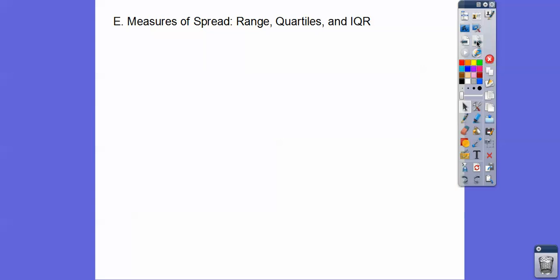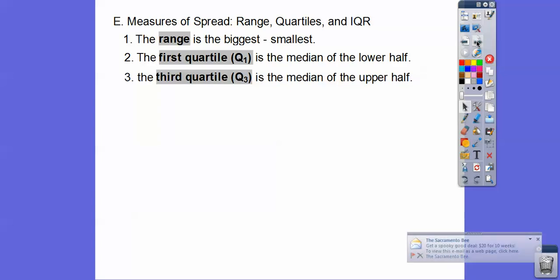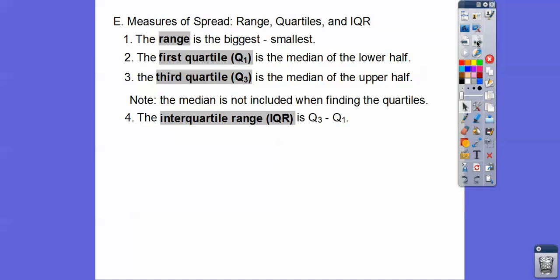So other measures of spread are called the range, quartiles, and the IQR, which is the interquartile range. So the range, all you do is take the biggest number and subtract the smallest number. It's the range from the numbers of the smallest to the biggest, or the biggest to the smallest. The first quartile, which is Q1, is the median of the lower half, and then the third quartile is the median of the upper half. And the median is not included when you're finding the quartile. And then the interquartile range is Q3 minus Q1 right here.